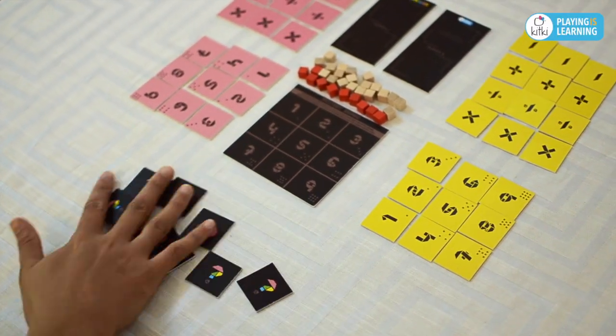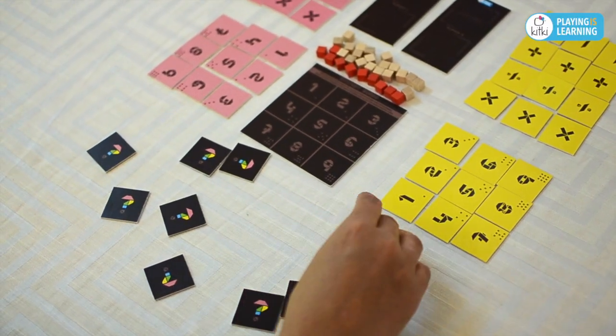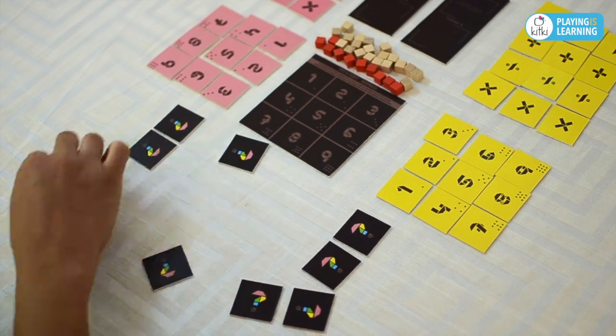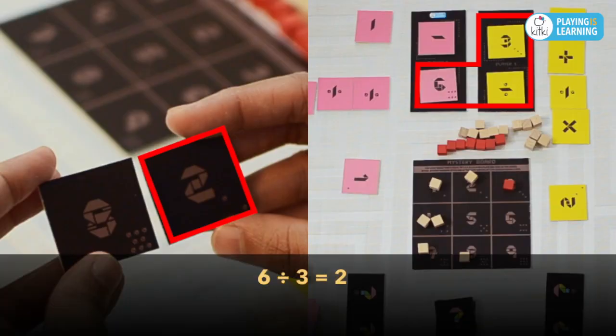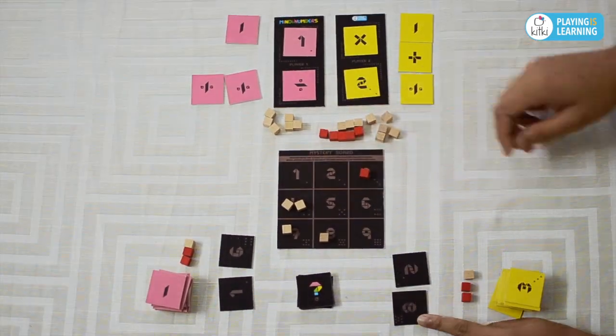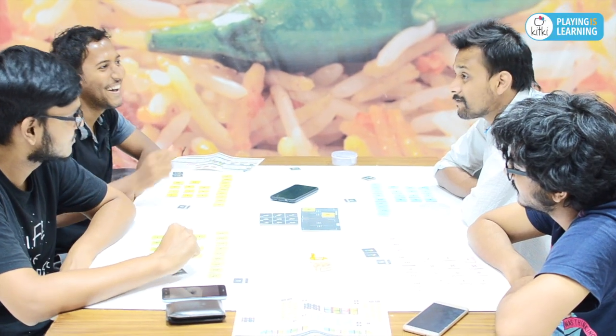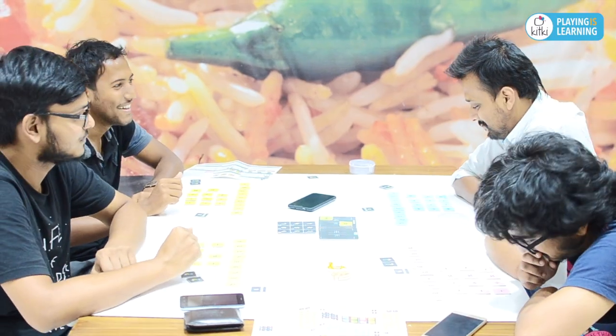Each player also gets two randomly chosen mystery numbers at the beginning of the game. By secretly matching the results in each round with their mystery numbers, players may earn bonus points in the end. This could change your strategy every time you play the game.